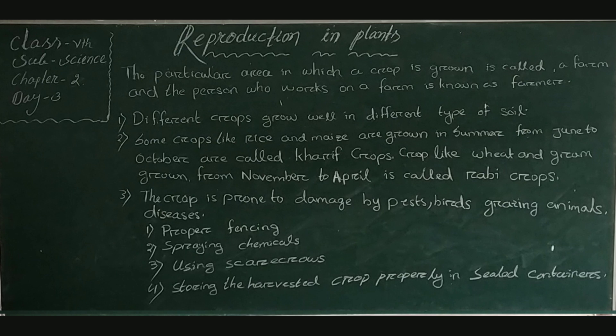The crop is also damaged by pests, birds, grazing animals, and diseases. It can be protected in some ways: proper fencing, spraying chemicals or insecticides and pesticides, using scarecrows, and storing the harvested crops properly in sealed containers. This concludes reproduction from other parts and crops and agriculture. In your next class, we will discuss the third chapter: Food, Health and Hygiene. Thank you, students.